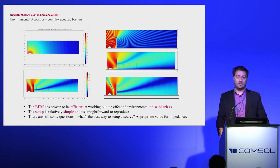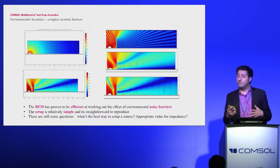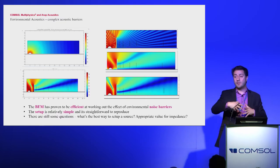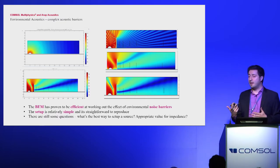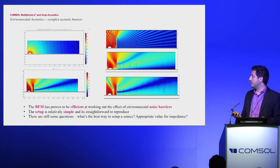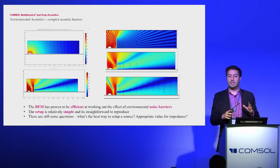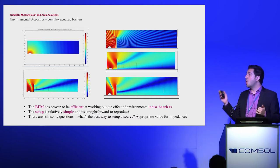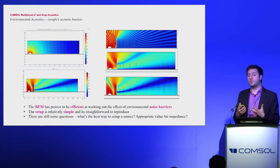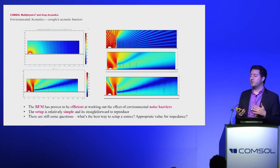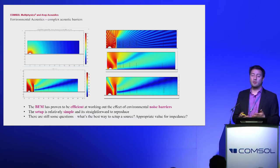For environmental acoustics, we look at the design of complex noise barriers alongside roads and railways to protect nearby sensitive receptors. Standard barrier tools work well, but for bespoke complex barriers COMSOL gives us a starting point. We found the boundary element method very efficient for large geometries. One challenge is source setup — whether to use an omnidirectional source or a line source has a significant impact on results, as does the impedance of the ground.